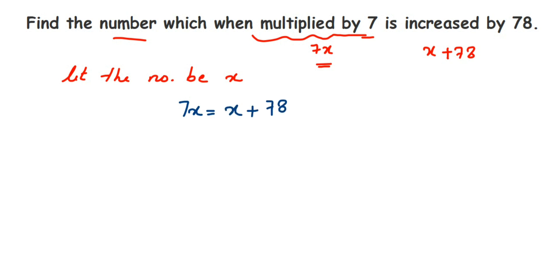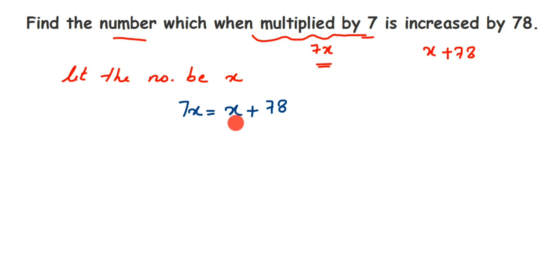7x is clear — the number x is multiplied by 7. It is increased by 78, meaning the number x is increased. Increase means you have to add, decrease means you have to subtract. So the number got increased by 78, therefore plus 78.